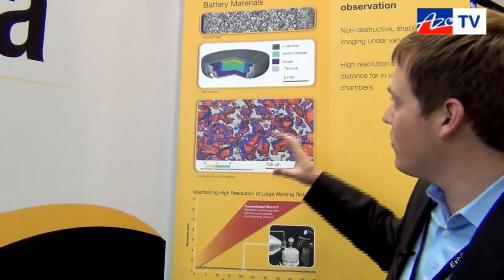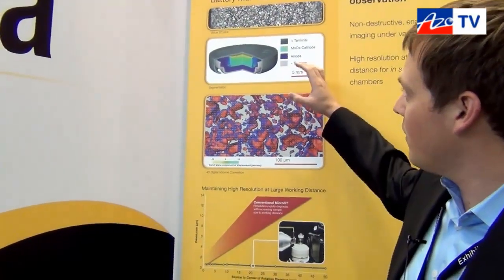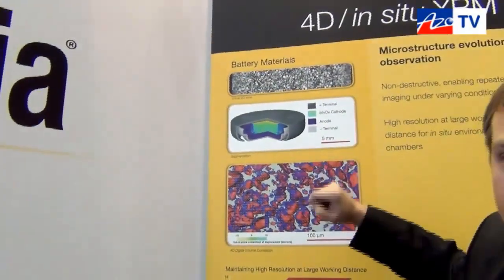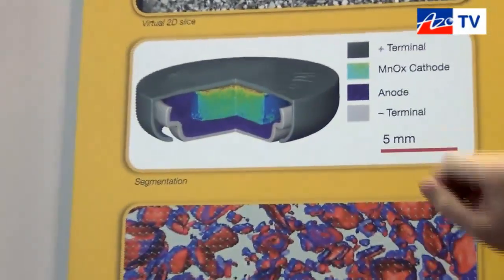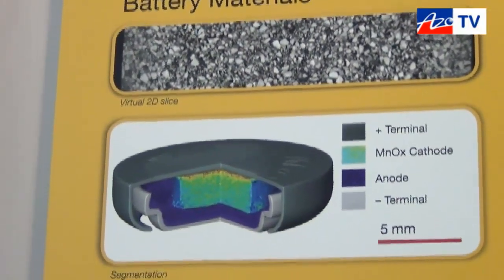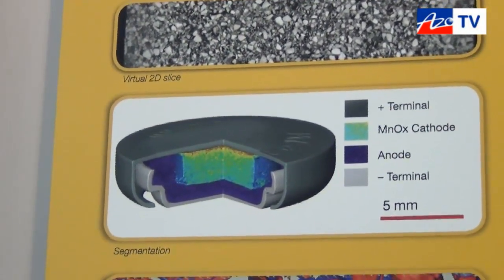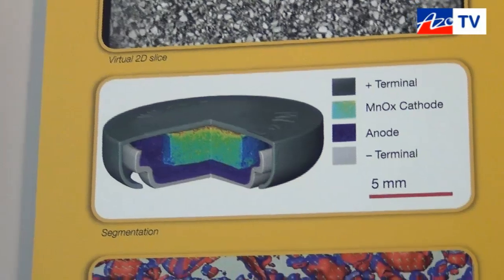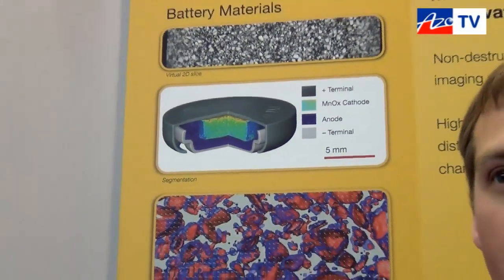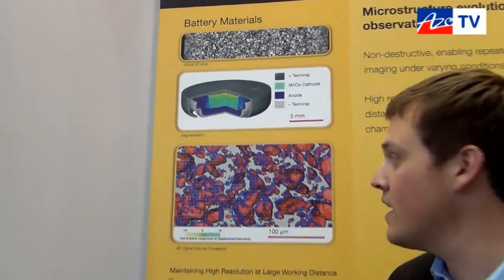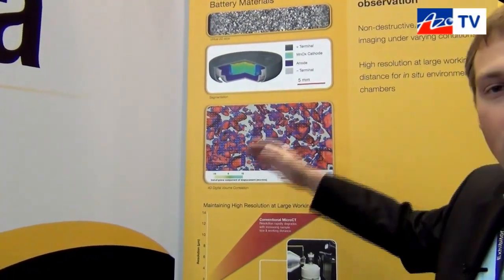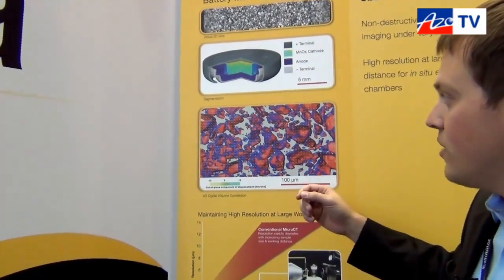Getting back to the result, what you see here is the ability to non-destructively image within this battery. This is a coin cell and we're looking at the anode and looking at a virtual cross-section of its microstructure that occurs on many different length scales. Now you can segment this, meaning you can separate each particle into its individual constituents, and then compare two different data sets before it's been charged and after it's been charged.